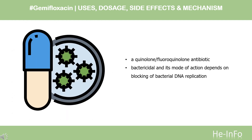Pharmacodynamics: Gemifloxacin is a quinolone/fluoroquinolone antibiotic. It is bactericidal and its mode of action depends on blocking bacterial DNA replication by binding itself to an enzyme called DNA gyrase, which allows the untwisting required to replicate one DNA double helix into two. Notably, the drug has 100 times higher affinity for bacterial DNA gyrase than for mammalian.